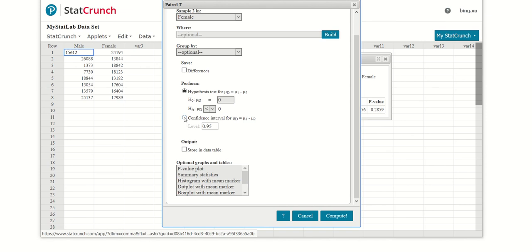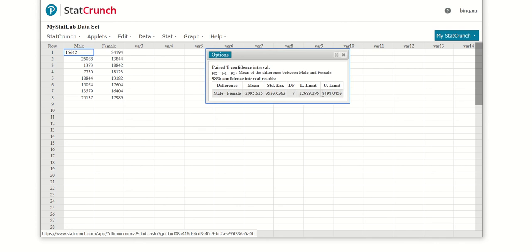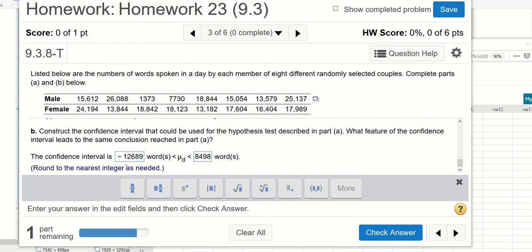So over here, confidence interval will be 0.98, compute. So here you have your lower limit and your upper limit. Round them to the nearest integer.